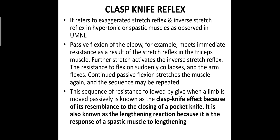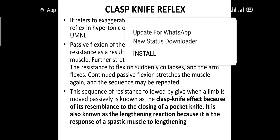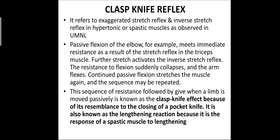The clasp knife reflex refers to an exaggerated stretch reflex and inverse stretch reflex in a hypertonic or spastic muscle, as observed in upper motor neuron lesions. Passive flexion of the elbow, for example, meets immediate resistance as a result of the stretch reflex in the triceps muscle. Further stretch activates the inverse stretch reflex, the resistance to flexion suddenly collapses, and the arm flexes. This sequence may be repeated, and is known as the clasp knife effect because it resembles the closing of a pocket knife.